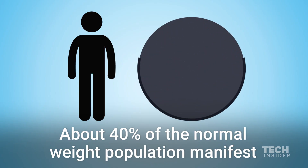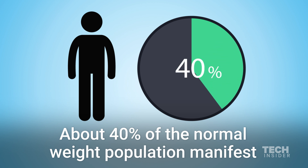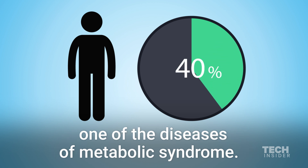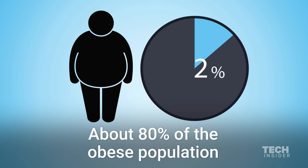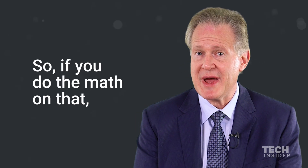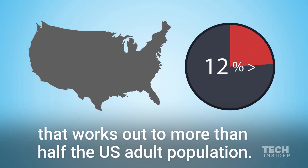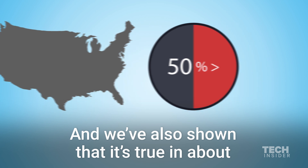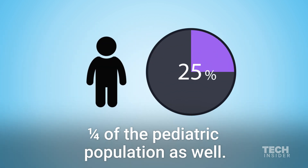About 40% of the normal weight population manifest one of the diseases of metabolic syndrome. About 80% of the obese population manifest those same diseases. So if you do the math on that, that works out to more than half the US adult population. And we've also shown that it's true in about one-quarter of the pediatric population as well.